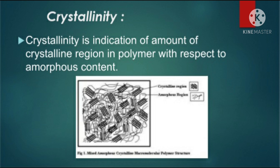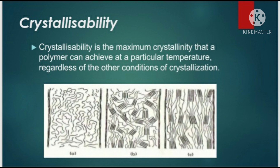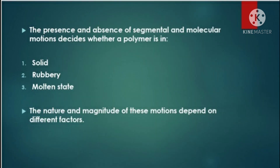Crystallinity indicates what a polymer can achieve at a particular temperature regardless of other conditions of crystallization. In the first figure, there is little or no crystallinity as there is no aligned part. In the second diagram, some parts are in aligned condition showing crystallinity. In the third figure, there is maximum crystallinity that a polymer can achieve. The presence and absence of segmental and molecular motion will decide whether the polymer is in solid, rubbery, or molten state.